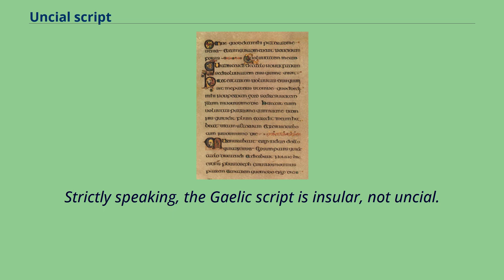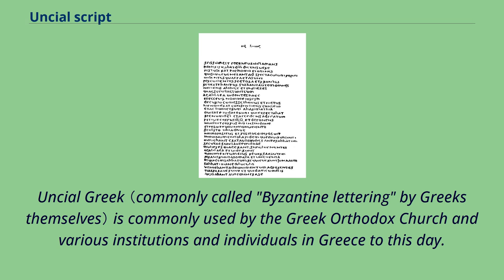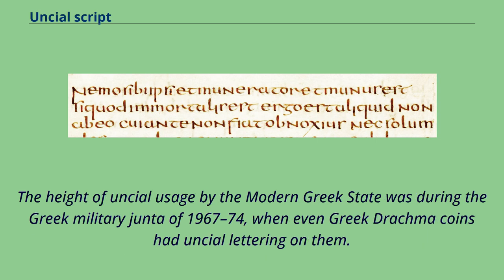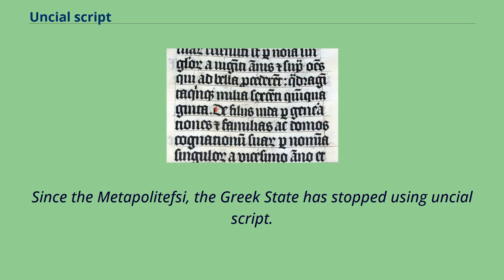Strictly speaking, the Gaelic script is insular, not Uncial. Uncial Greek is commonly used by the Greek Orthodox Church and various institutions and individuals in Greece to this day. The modern Greek state has also used Uncial script on several occasions in an official capacity, as did many of the Greek provisional governments during the Greek War of Independence. The height of Uncial usage by the modern Greek state was during the Greek military junta of 1967–74, when even Greek drachma coins had Uncial lettering on them. Since the Metapolitefsi, the Greek state has stopped using Uncial script.